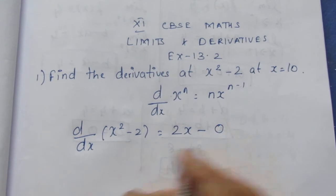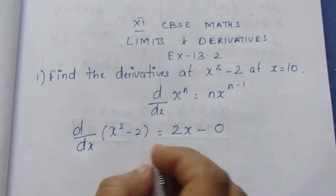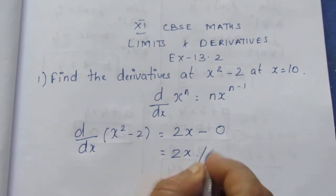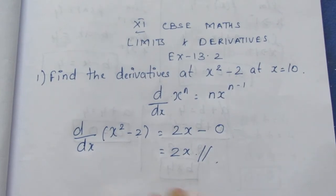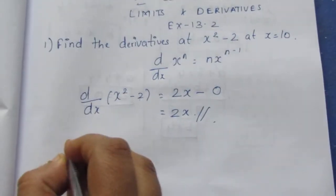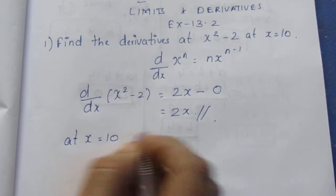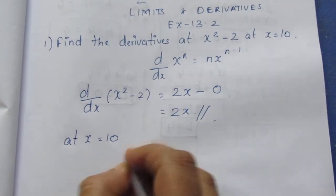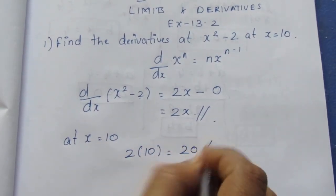So, applying the derivative of x squared gives us 2x. Substituting x is equal to 10, we get 2 into 10, which gives us 20.